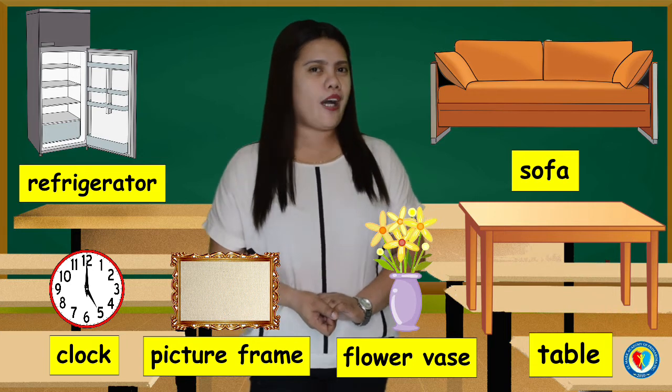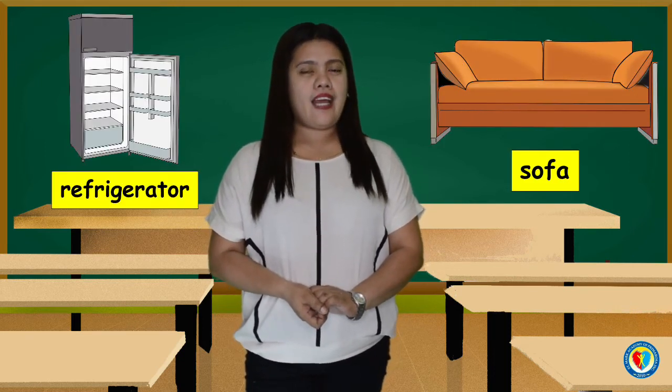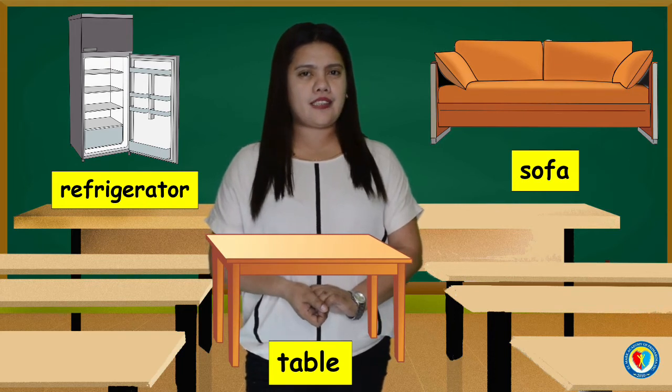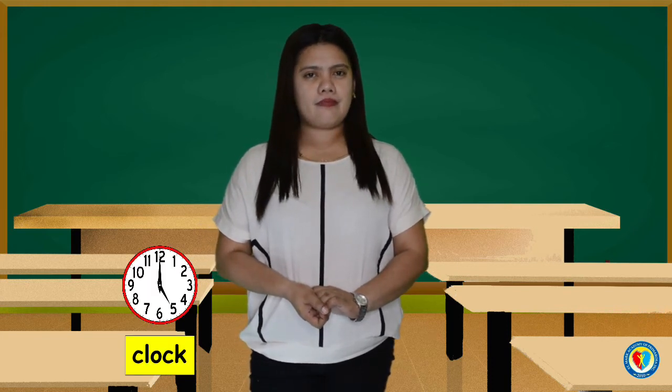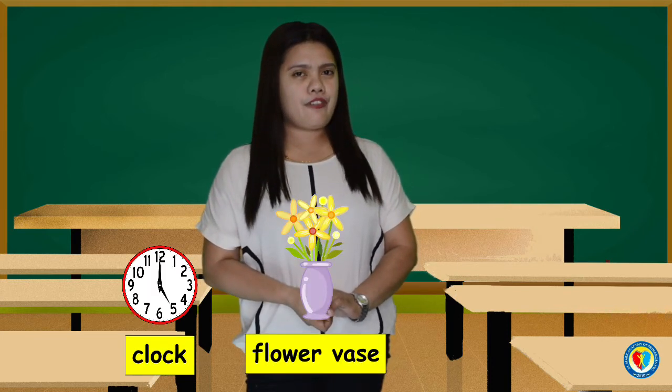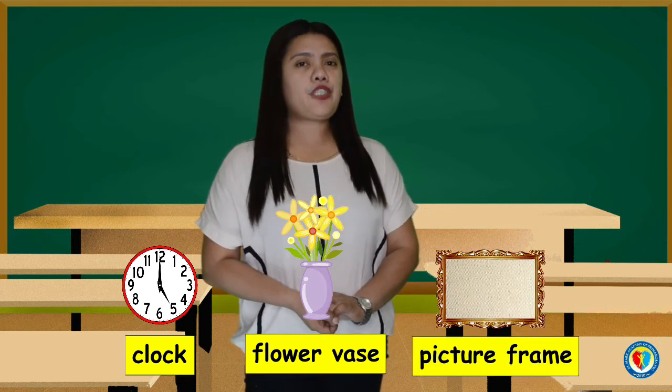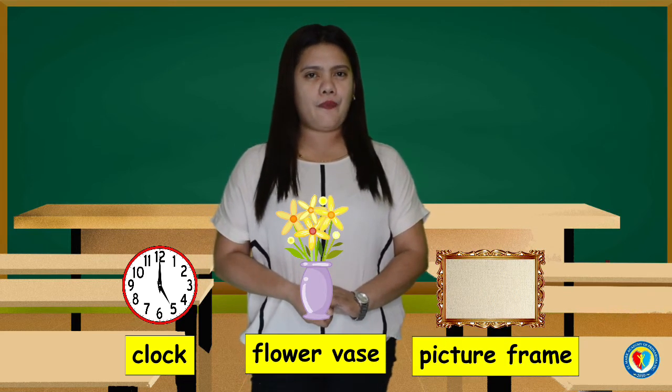What are those objects? That's right — sofa, refrigerator, and table are big objects. Others are small: clock, flower vase, and picture frame are small objects.